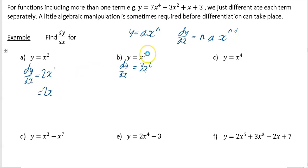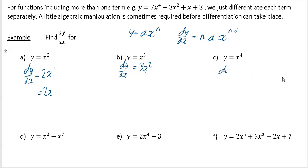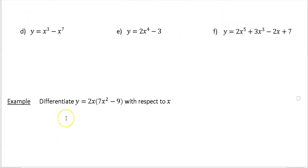Part b: multiply by the power and reduce the power by one — that gives 3x squared. Part c: dy by dx equals multiply by the power and reduce by one — that gives 4x cubed.